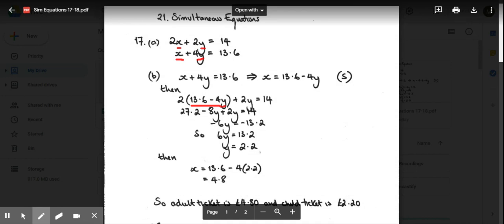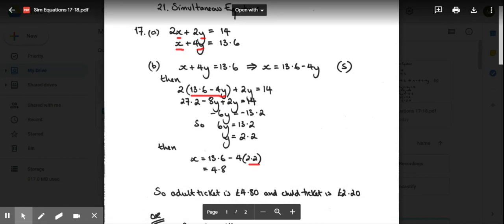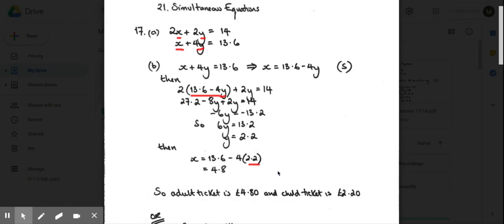I'm then going to substitute that value back into this equation to find the value of x, so it's 13.6 - 4(2.2) and that gives me 4.8. So that tells me that an adult ticket is £4.80 and a child ticket is £2.20.